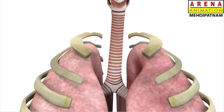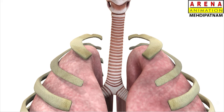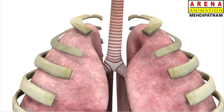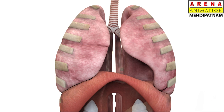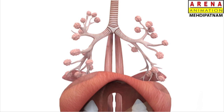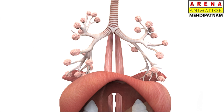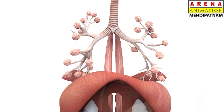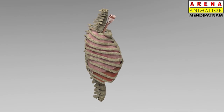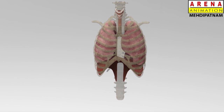At the lower end of the trachea, it is divided into two parts called bronchi, one leading to each lung. In the lung, each branch further divides into smaller and smaller parts called bronchioles. Each branch carries small air sacs called alveoli. These lungs are located on the right and left sides of the rib cavities.